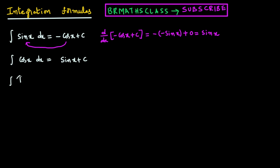Third formula: integral of tan x dx. Integral of tan x dx is logarithm of modulus of secant x plus c. I written modulus of secant x because logarithm is defined only for positive real numbers. Simply, we can say log secant x if you remember that secant x is positive. Why is the integral of tan x dx equal to log mod secant x?